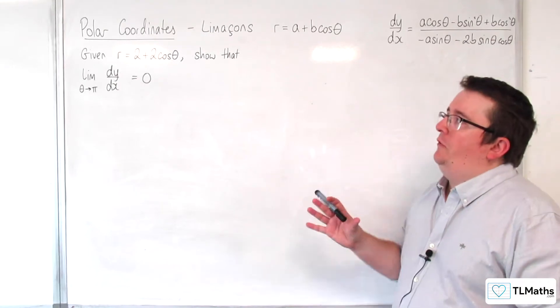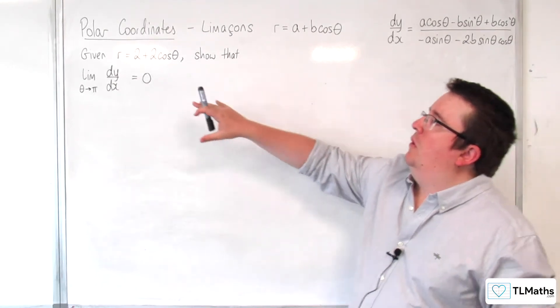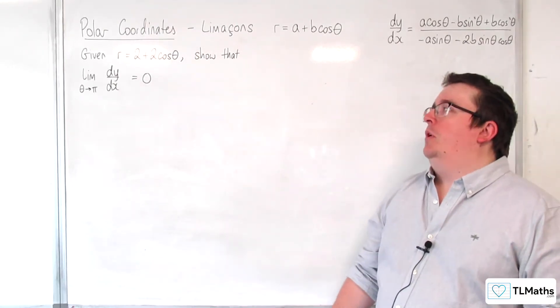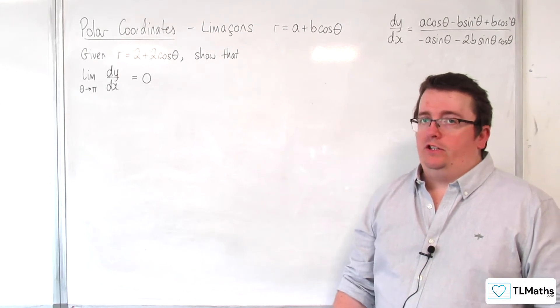In this video we're going to investigate when we've got r equals 2 plus 2 cosine theta, so this is a cardioid.